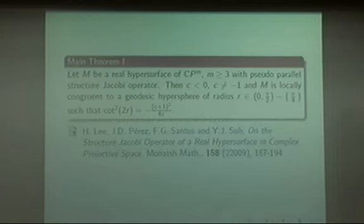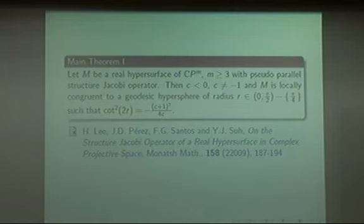Thus we have the main classification result: M is a real hypersurface of complex projective space with pseudo-parallel structure Jacobi operator. Then C is a negative integer and not minus one. Moreover, M is locally congruent to a geodesic hypersphere of radius R belonging to this interval.